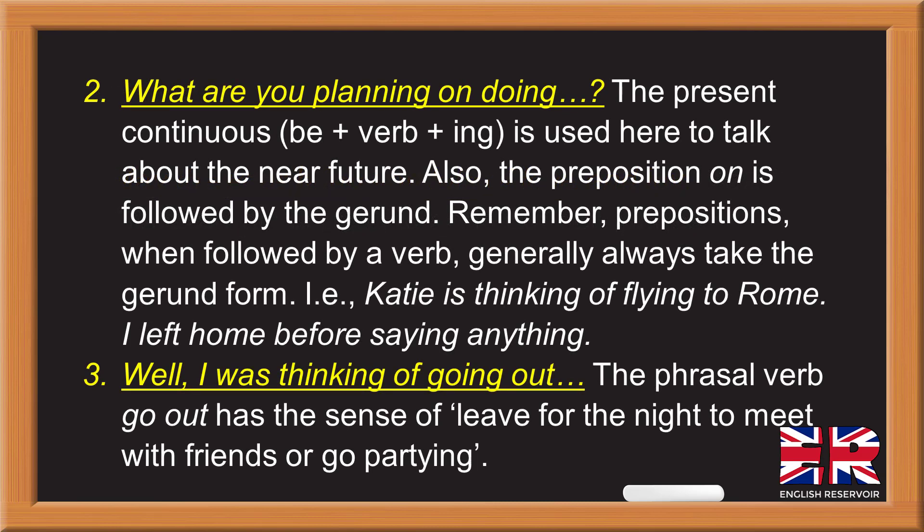2. 'What are you planning on doing?' — the present continuous (be + verb + -ing) is used here to talk about the near future. Also, the preposition 'on' is followed by the gerund. Remember, prepositions when followed by a verb generally always take the gerund form — for example, 'Katie is thinking of flying to Rome' or 'I left home before saying anything.'